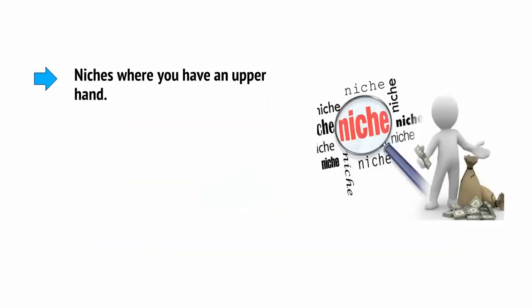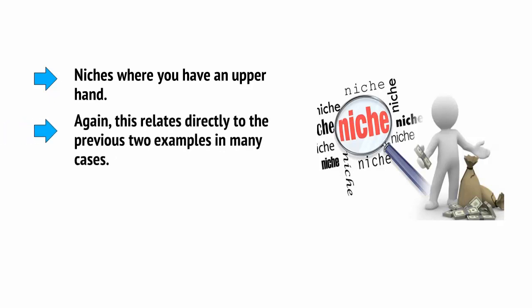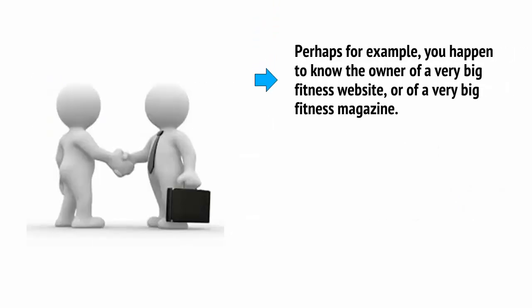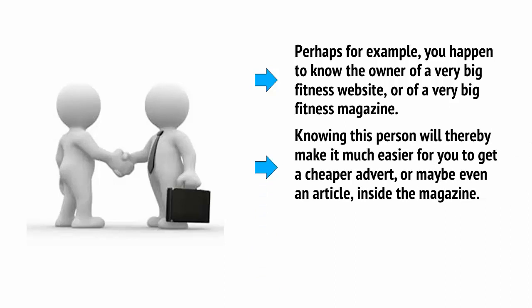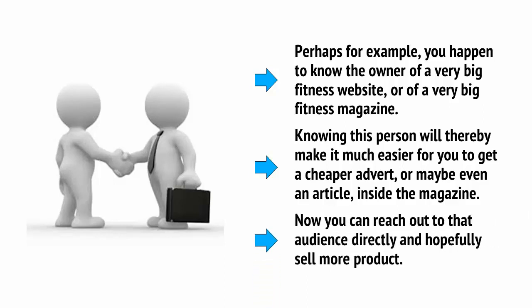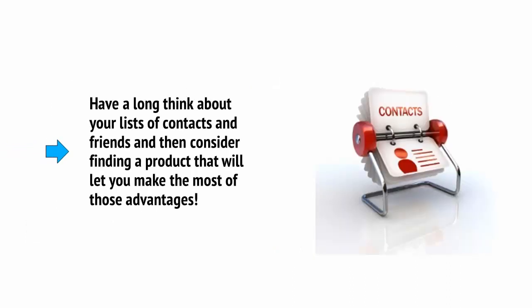There are also niches where you have an upper hand. This relates directly to the previous two examples in many cases. Most of us will have contacts and advantages in some niches that give us an edge. For example, you might happen to know the owner of a very big fitness website or a very big fitness magazine. Knowing this person will make it much easier for you to get a cheaper advert, or maybe even an article, inside the magazine. Now you can reach out to that audience directly and hopefully sell more product. Have a long think about your list of contacts and friends, and then consider finding a product that will let you make the most of those advantages.